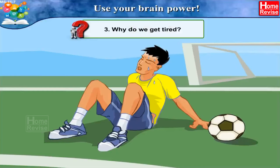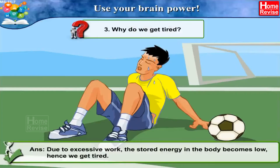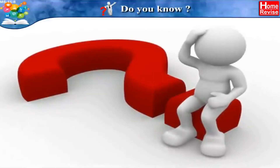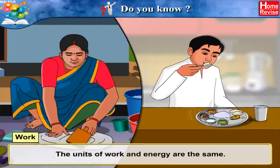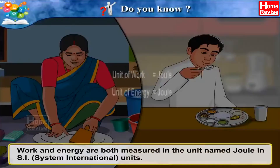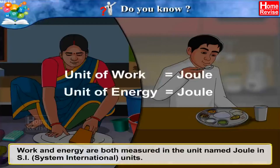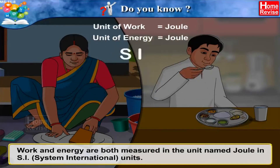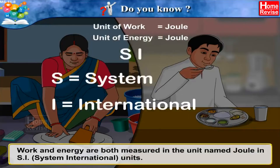Question 3: Why do we get tired? Answer: Due to excessive work, the stored energy in the body becomes low, hence we get tired. The units of work and energy are the same — work and energy are both measured in the unit named Joule in SI (System International) units.